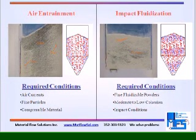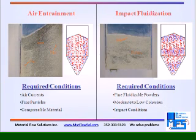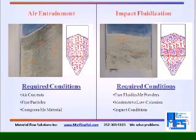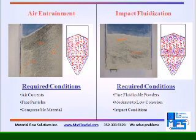Air entrainment segregation requires air currents. These currents could come from a free-fall drop or other means. It also requires a fine powder and a compressible bulk material. The pattern in this type of segregation is a side-to-side pattern with the fines generally at the container edge.